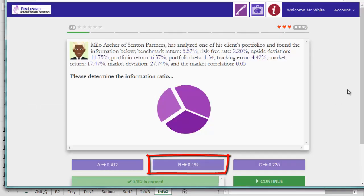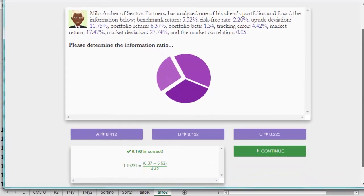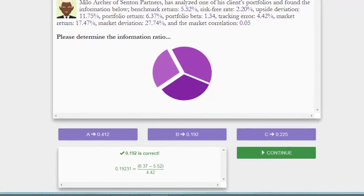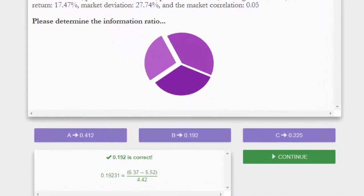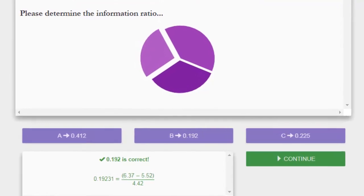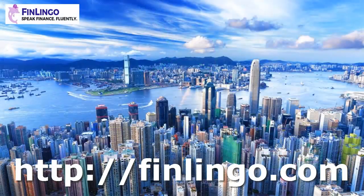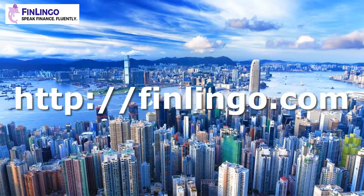Click this over on Finlingo and the job is complete. Head on over now to finlingo.com to get an infinite number of questions on how to calculate the information ratio. You'll find this and hundreds of other CFA style questions including questions on ethics and economics. Finlingo. Speak finance fluently.